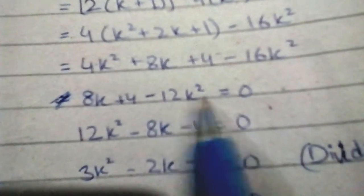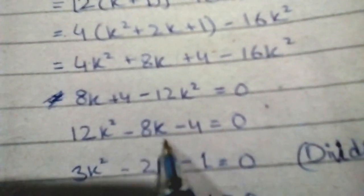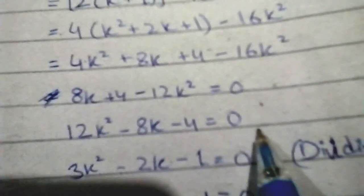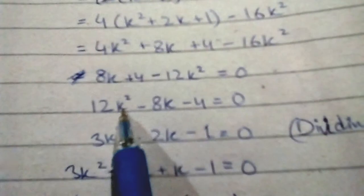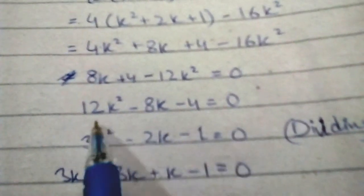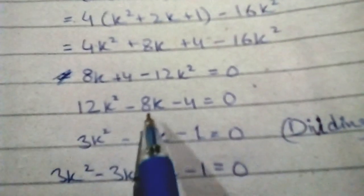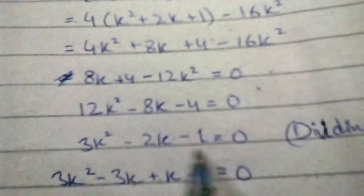Rearranging: 12k² - 8k - 4 = 0. Dividing everything by 4 gives: 3k² - 2k - 1 = 0.